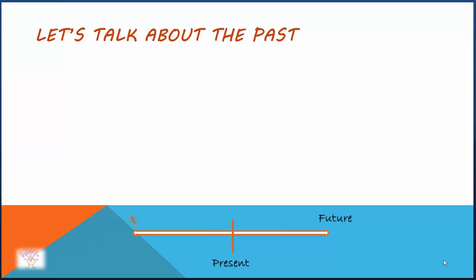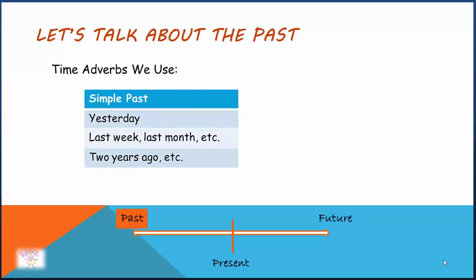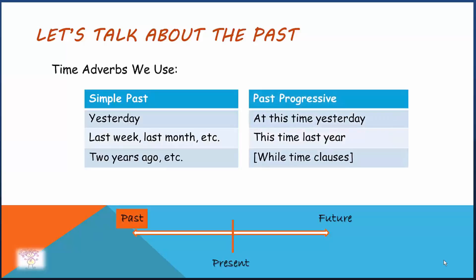Let's talk about the past. We use yesterday, last week, last month, etc., two years ago in simple past tense. For past progressive, we use at this time yesterday, this time last year, and while time clauses.